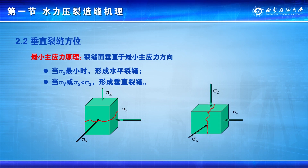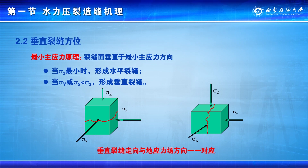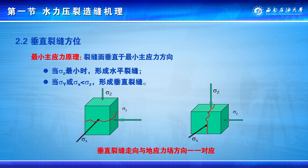当水平主应力最小时，形成垂直裂缝，且裂缝面垂直于该水平最小主应力的方向。由此可知，地应力状态是由重力应力、构造应力和热应力所构成的三项不等压应力状态，水力裂缝延伸满足最小主应力原理，对于孔隙性地层，存在水平裂缝和垂直裂缝两种形态。下节课，我们将学习计算垂直井地层破裂压力的思路和方法。今天就讲到这里。